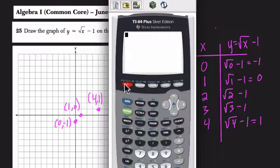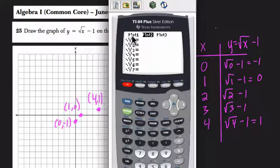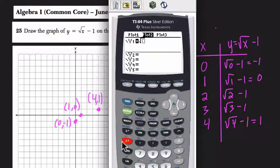So to do that, we hit the y equals button up here. Then we want to enter in the square root of x. So hit 2nd x squared. If you hit 2nd x squared, you see a little square root sign right there. Now we enter in the variable x. That's this button right here where it says x.